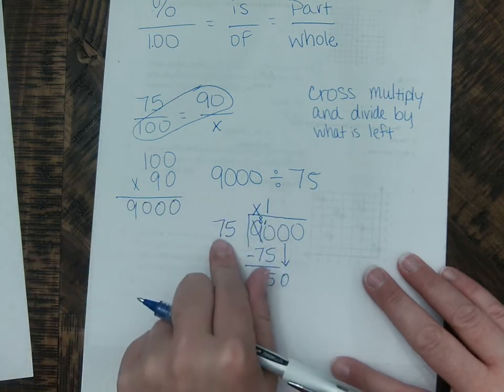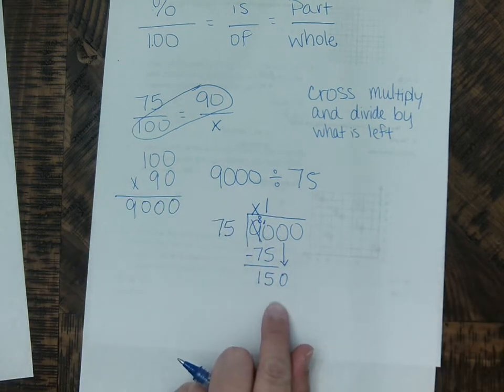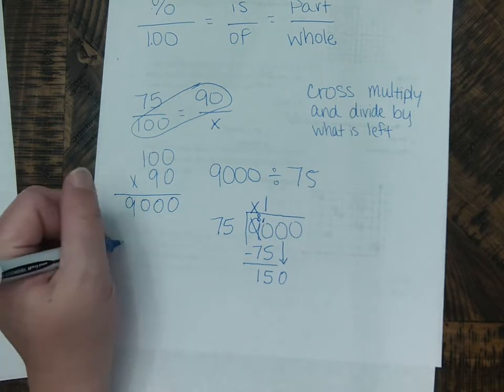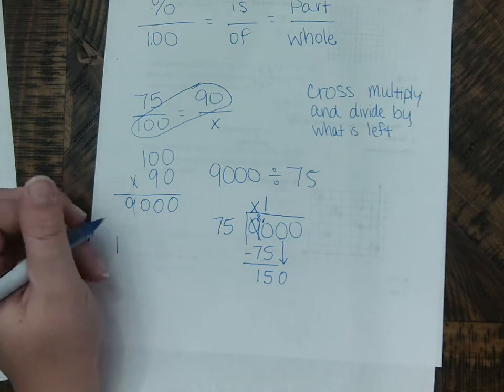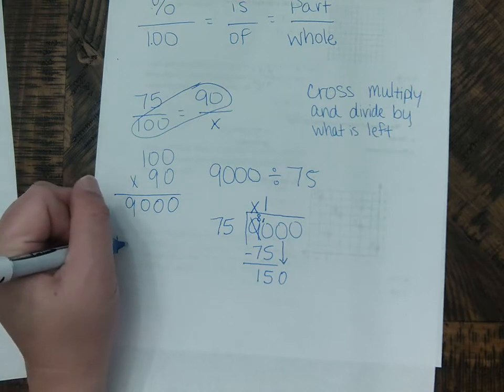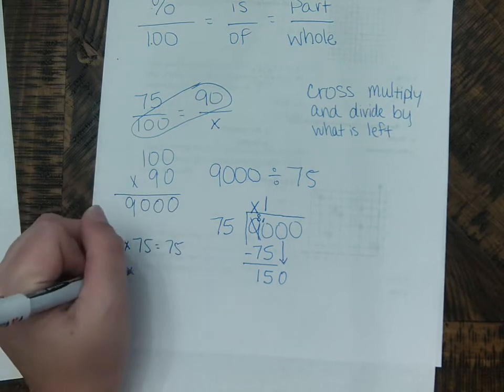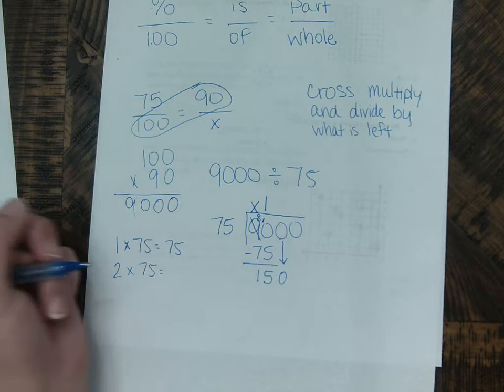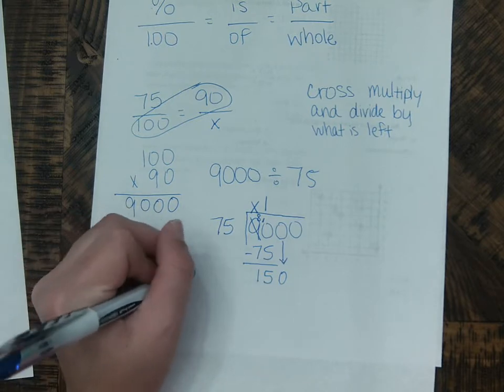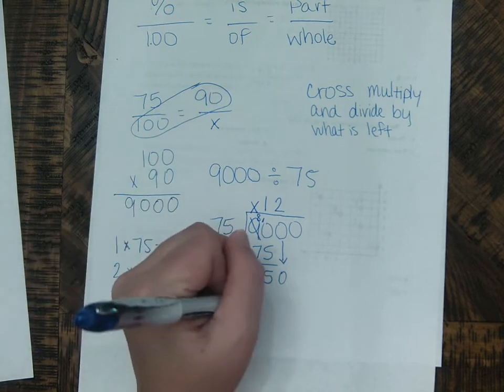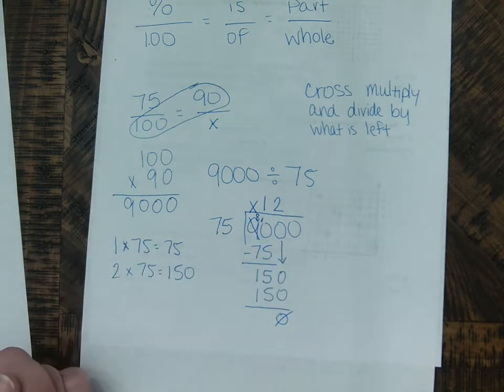So how many times can 75 go into 150? So let's think about our facts. We have 1 times 75 equals 75. What about 2 times 75? What is 75 plus 75? It's 150. So this is going to be a 2. 2 times 75 we just said was 150. That equals 0.